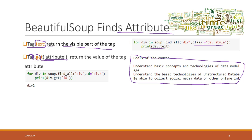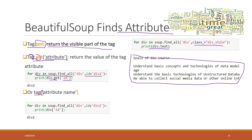Here we find the DIV tag whose ID equals a specific value. If we want to get the value of that ID, we can call DIV.get('id'). Similarly, you can also use the square bracket syntax: tag['attribute_name'], and it will return the value of that attribute.